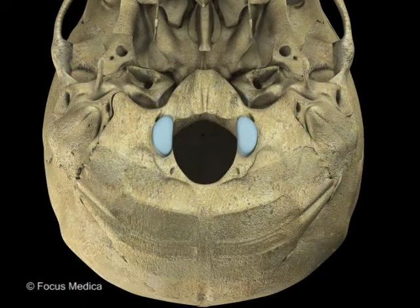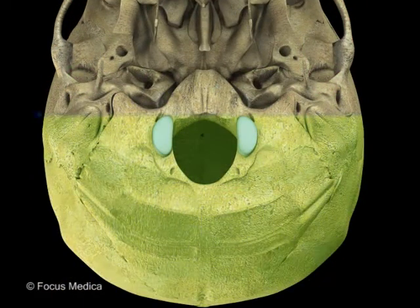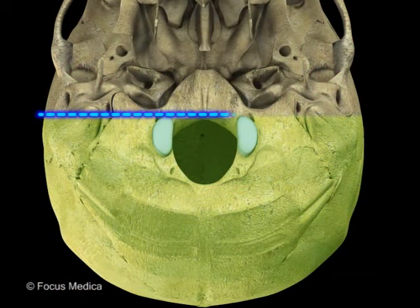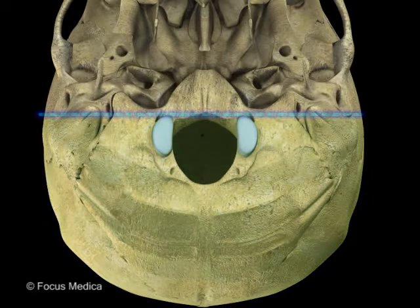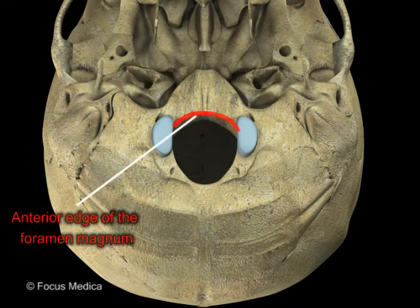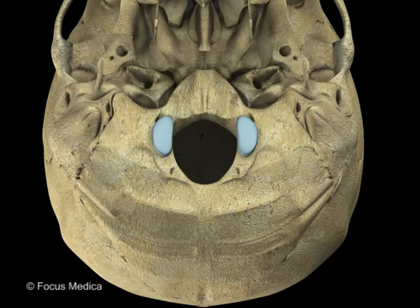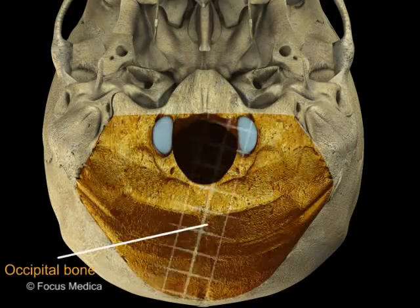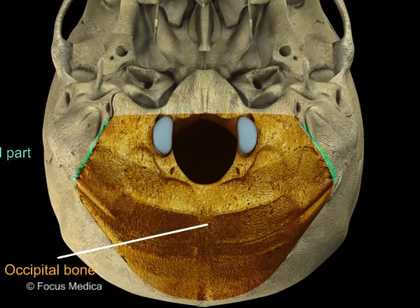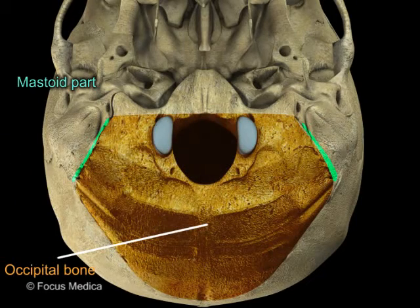The posterior area is behind the horizontal line along the anterior edge of the foramen magnum. It consists of the occipital bone and the mastoid part of the temporal bone.